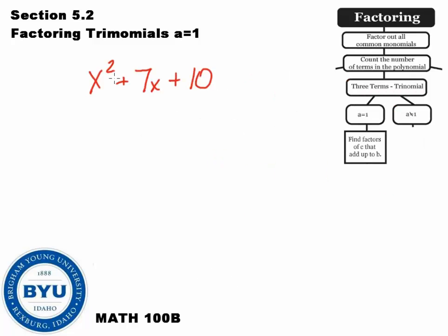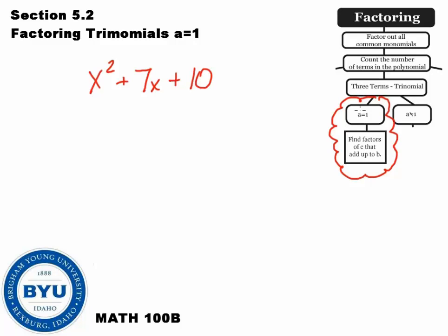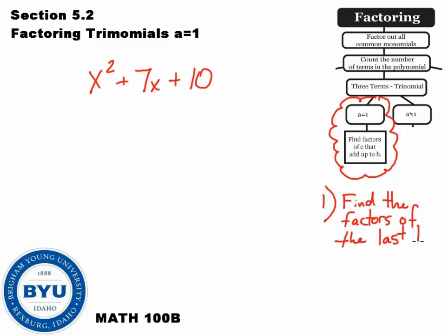Here's an example: x squared plus 7x plus 10. Notice that this is a three-term polynomial — one, two, three terms. Also notice that the leading coefficient is 1. The coefficient with the largest power is 1. When that's the situation, we're going to use this rule, which states that if you want to factor this, you follow these steps. Step number one: find the factors of the last term, which we call c, that add to b.